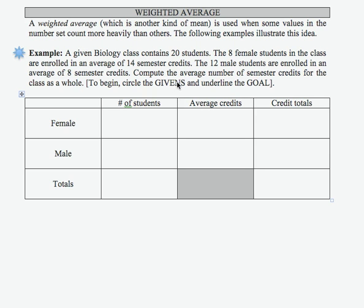A weighted average, which is another kind of mean, is used when some values in a number set count more heavily than others. Let's see how that works in the following example. We have a biology class that contains 20 students — I'm going to circle that — that's a piece of information that's given to us.